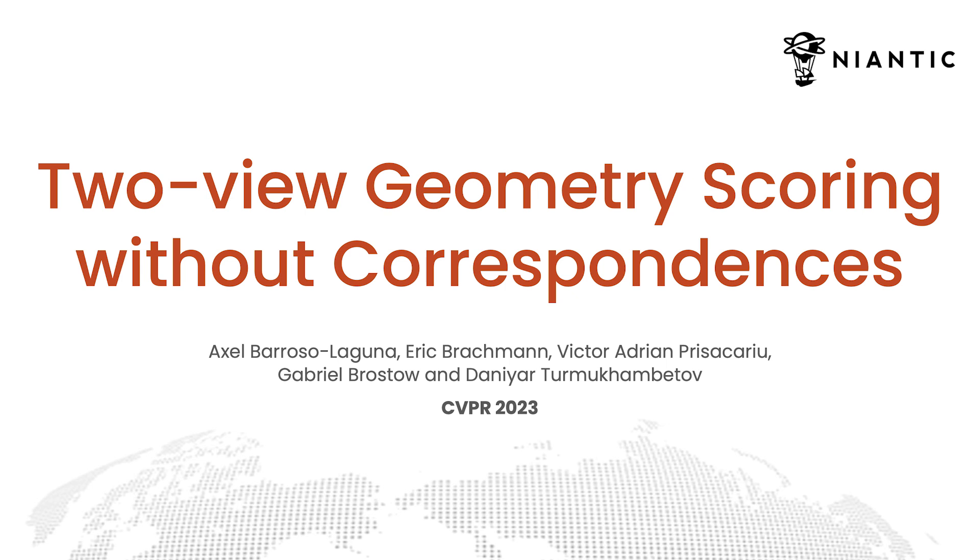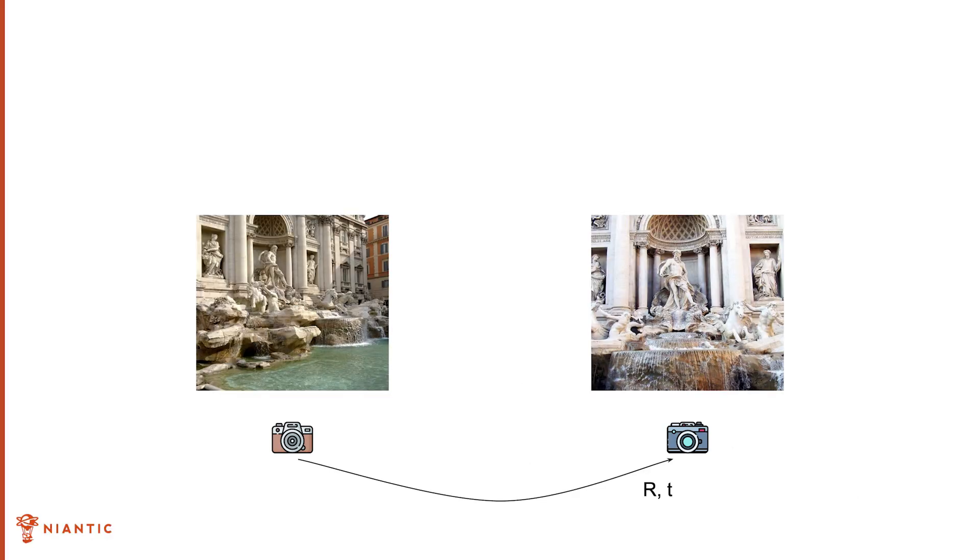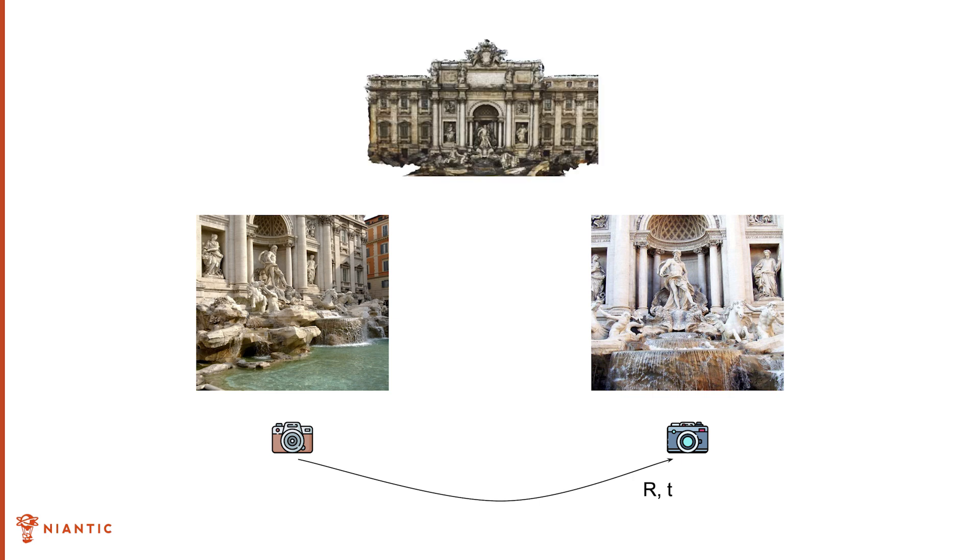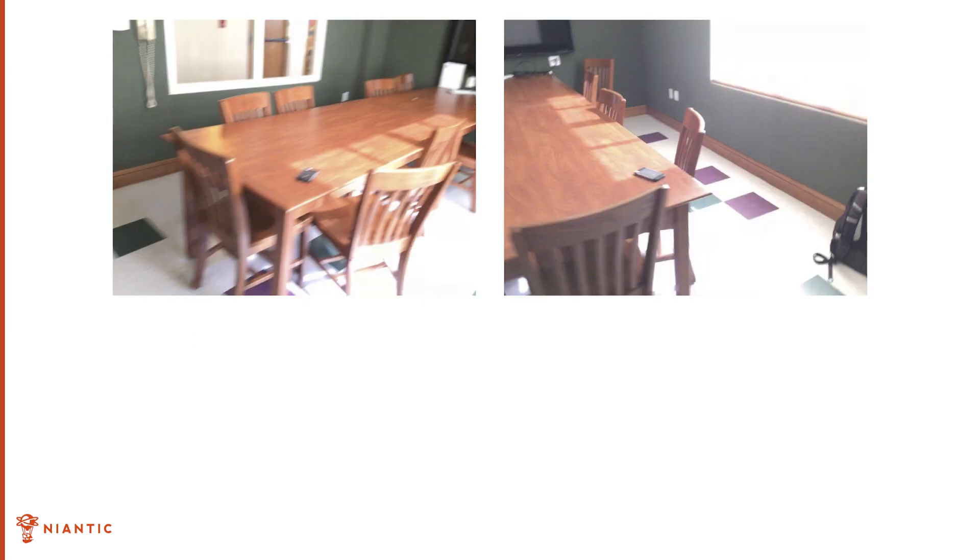Estimating the two-view geometry between a pair of images enables the creation of stunning 3D reconstructions. But what happens when the images lack discriminative structures, like these indoor images with repetitive patterns and uniform textures?